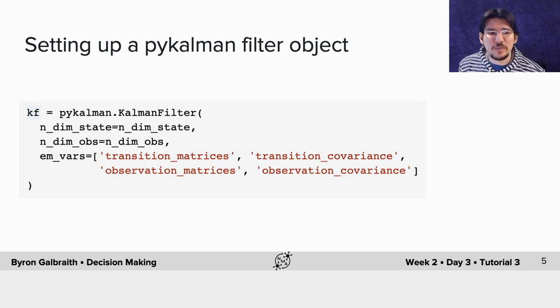You specify your hidden state, which in this case will be the x and y coordinates of where the eye gaze is, and the dimensionality of our observations, which is also two—the actual observed x and y coordinates of the pixels. Then we tell it what parameters we want it to fit using the expectation maximization algorithm. In this case, it's the transition matrices F, the transition covariance Q, the observation matrices H, and the observation covariance R.